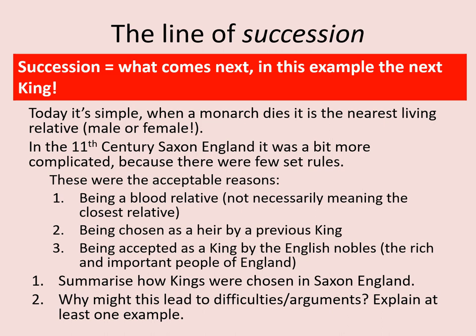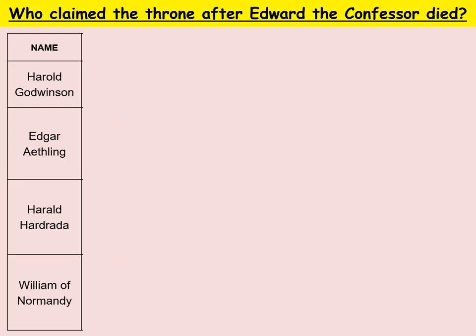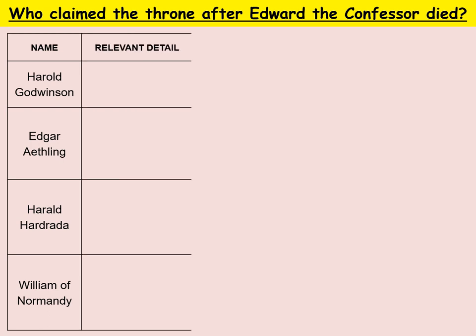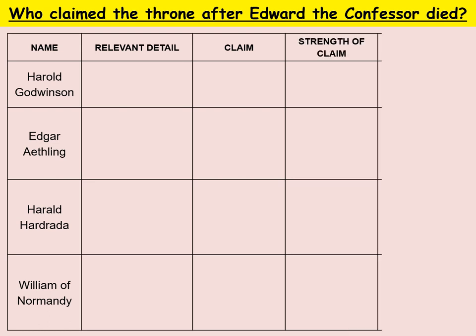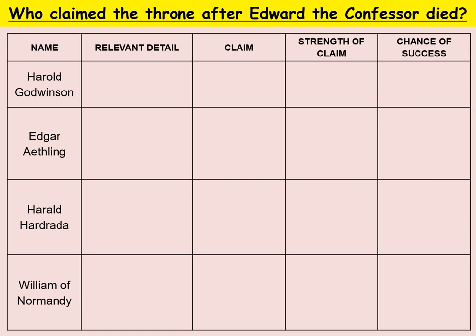Let's look at who was trying to claim the throne in 1066. The four claimants are: Harold Godwinson, Edgar Atheling, Harold Hardrada, and William of Normandy. The things to consider include relevant detail about each claimant, their claim — why do they think they should be king — how strong their claim is, and how good their chance of success seems to be.